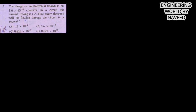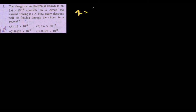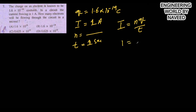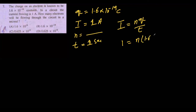Next MCQ: the charge on an electron is 1.6 × 10⁻¹⁹ coulomb. In a circuit, the current flowing is 1 ampere. How many electrons will be flowing through the circuit in one second? Given: charge q = 1.6 × 10⁻¹⁹ C, current I = 1 A, time t = 1 second. Using the formula I = nq/t, putting in the values: 1 = n × 1.6 × 10⁻¹⁹ / 1.